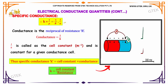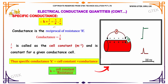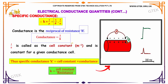To summarize: specific conductance kappa k equals 1 divided by rho, which is 1 divided by R multiplied by L divided by A. Conductance itself is the reciprocal of resistance R, so conductance equals 1 divided by R.